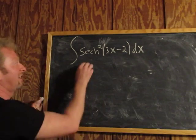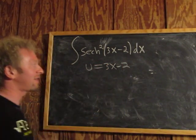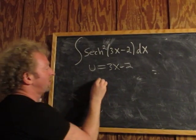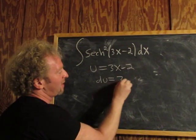The obvious choice is to let u equal 3x minus 2. Now that u equals 3x minus 2, we can compute du. So du, the derivative of 3x minus 2 is simply 3, and then we have the dx.